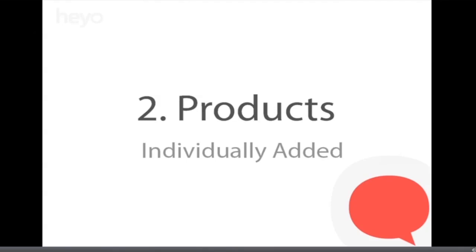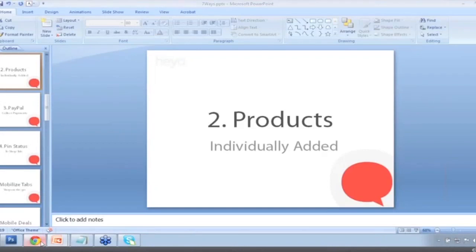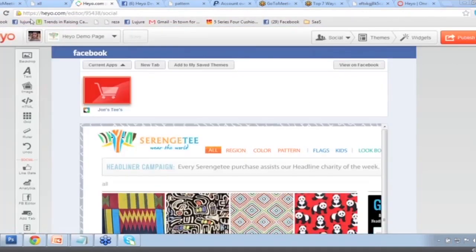Let's move on to step number two. Many of you might be thinking: it's great, but I don't even have a website set up. How am I going to use this if I don't have products on a website? How many of you don't even have a website but still want to sell through Facebook? The next strategy is using Heyo's product widget to individually add in a product — and you don't even need a website. We're going to integrate with PayPal, which anybody can use. Let me show you how to do that.